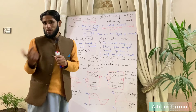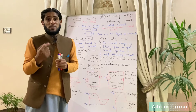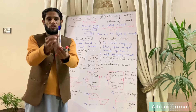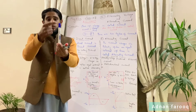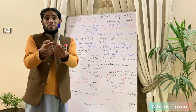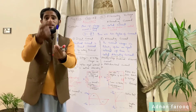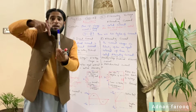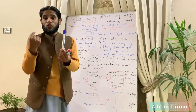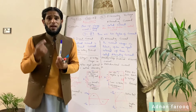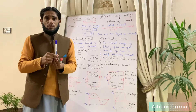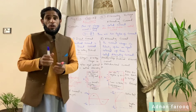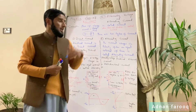ایک تو electric field ہے۔ For example، یہ کوئی wire ہے اس میں سے charges upward move کر رہے ہیں تو current کی direction upward ہے۔ ہم نے اس چپٹر میں پڑھا تھا کہ اس کے گرد magnetic field بنتی ہے۔ تو current نے، charges نے magnetic field بنائی۔